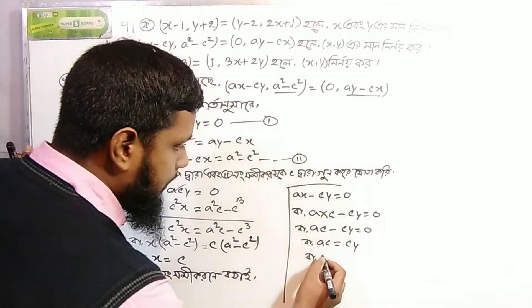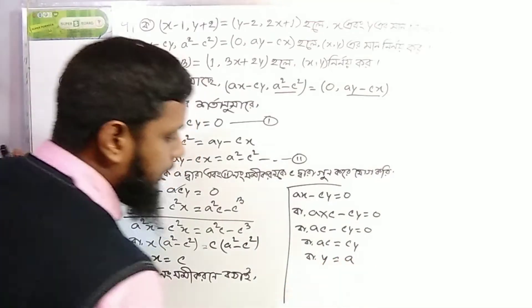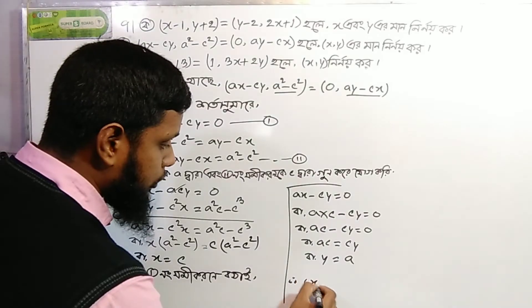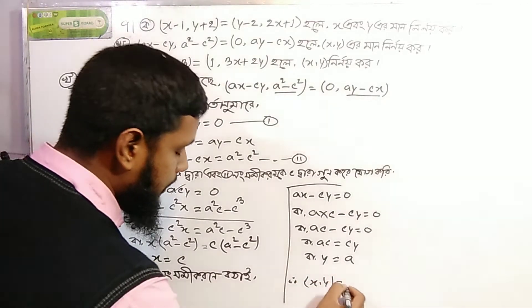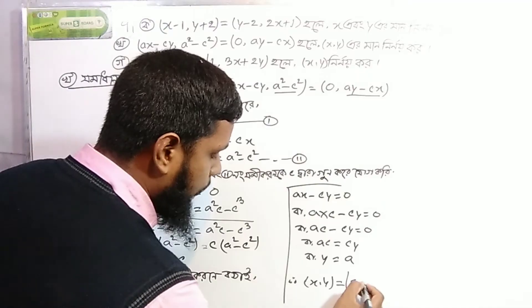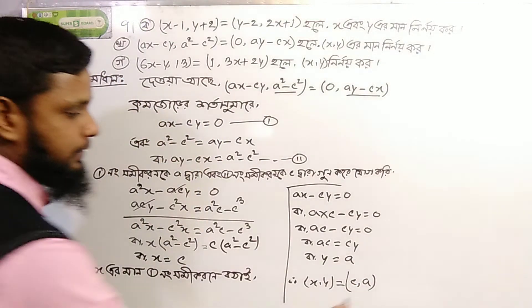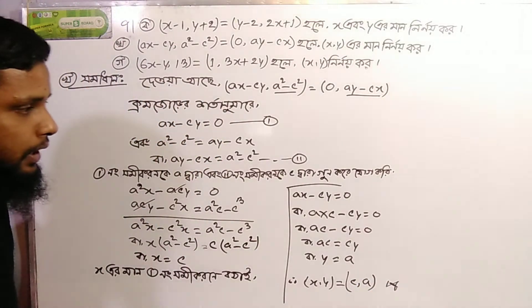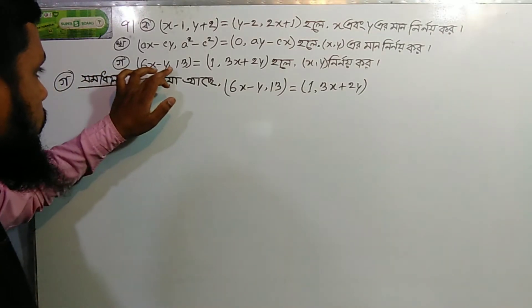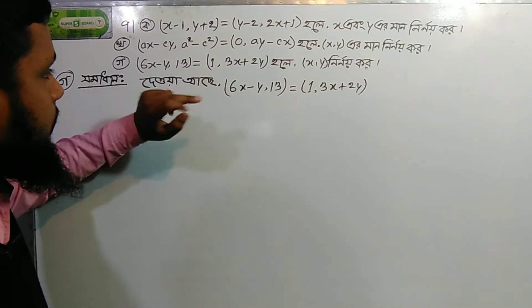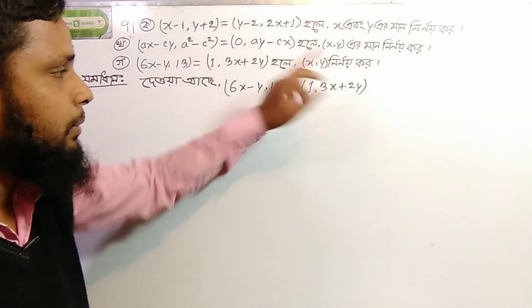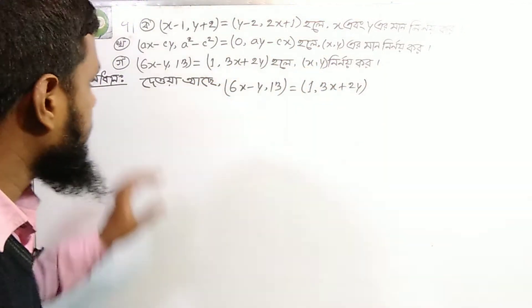So our equations are: 6x minus y equals 1, and 3x plus 2y equals 13. We need to find x and y. These are our simultaneous equations to solve.